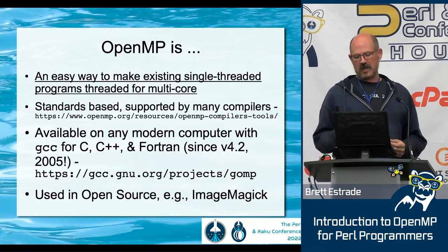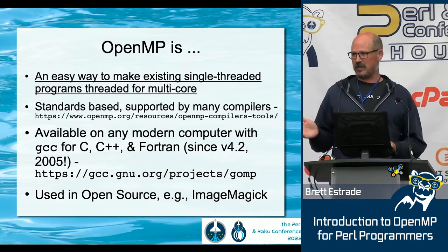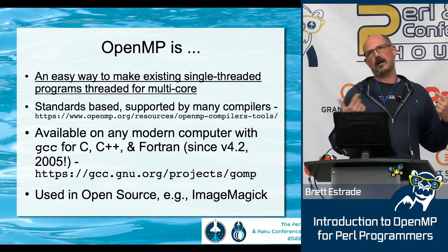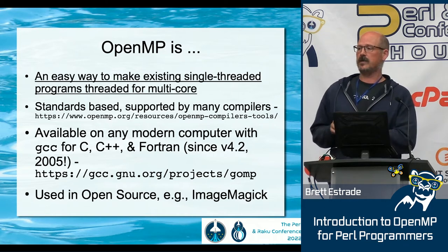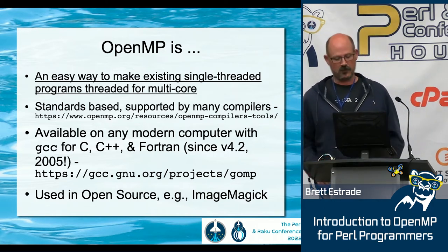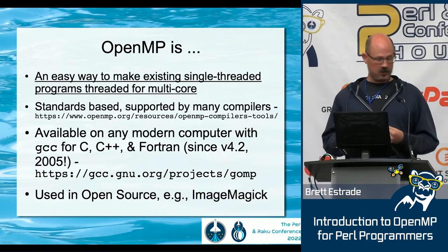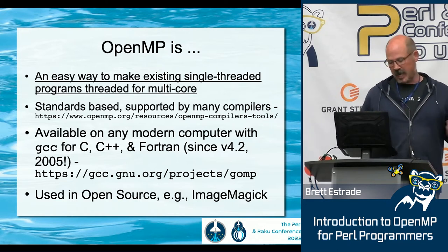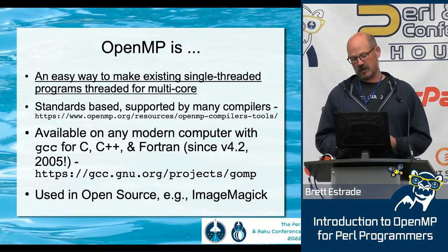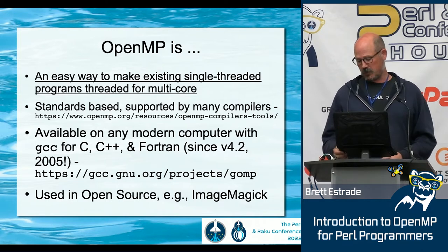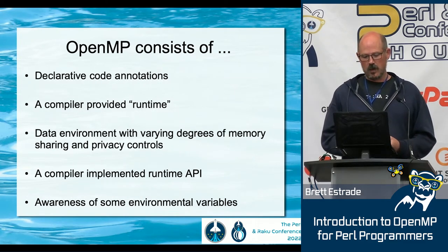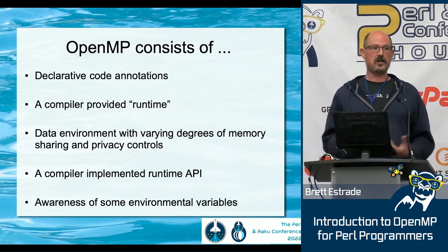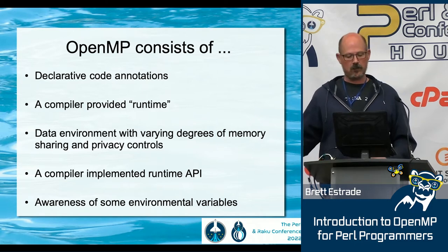I tried to look for open source projects that take advantage of OpenMP, and the only one I could find was ImageMagick — which makes sense because it deals with manipulating images, which are basically just large matrices. So it's a really good application there. I think it's a good opportunity for a lot of projects if you don't want to write your own low-level thread code. So what does OpenMP consist of? You can imagine you have existing code, though you can program from scratch with OpenMP in mind.